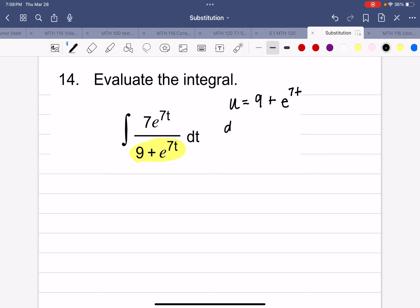then the derivative of u with respect to t is e^(7t) times 7. So look, that's du/dt is 7e^(7t). So I think I made the right decision.